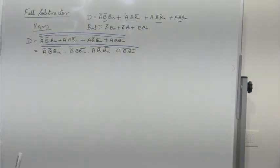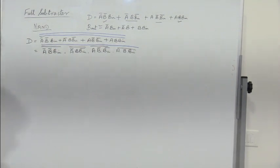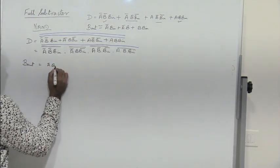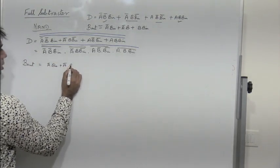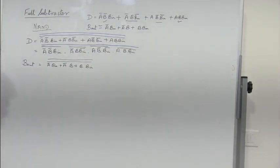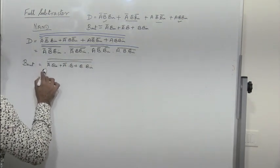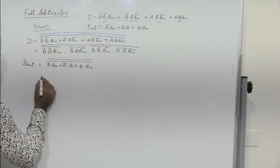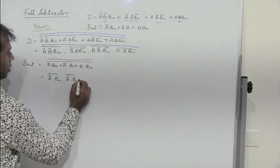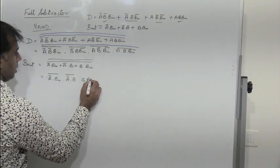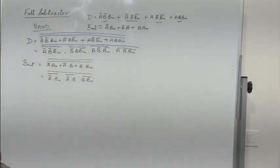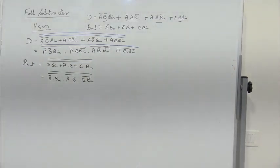Similarly for borrow out: A bar Bin + A bar B + B Bin — double complement and apply De Morgan's theorem. We get: (A bar Bin) complement into (A bar B) complement into (B Bin) complement, the whole complement. We stop here because we have converted all sum to product. So now let's see how this can be implemented using NAND gates only.